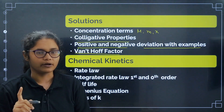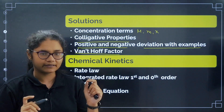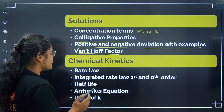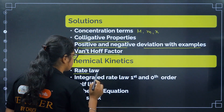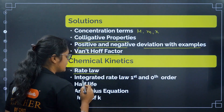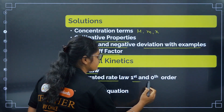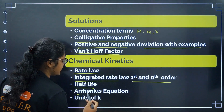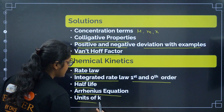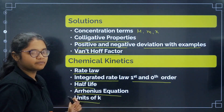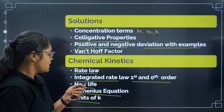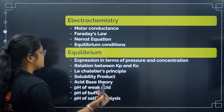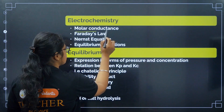Also learn maximum and minimum boiling azeotropes with their examples. Now coming to Chemical Kinetics: focus on rate law, integrated rate law for zero order and first order, half-life, the Arrhenius equation, and units of k.